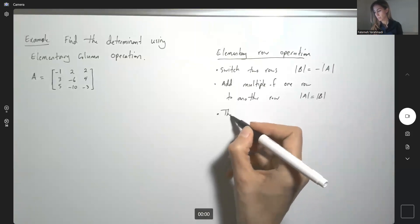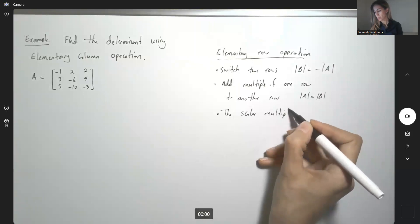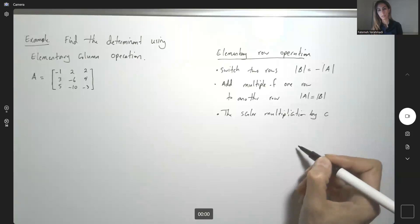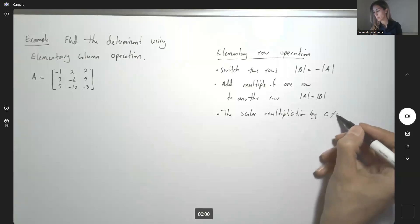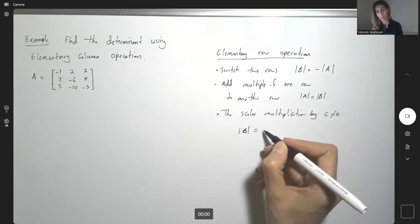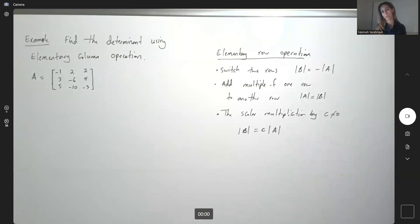And the scalar multiplication by a non-zero element like C, a non-zero scalar like C, results in the determinant of B becomes C times the determinant of A.